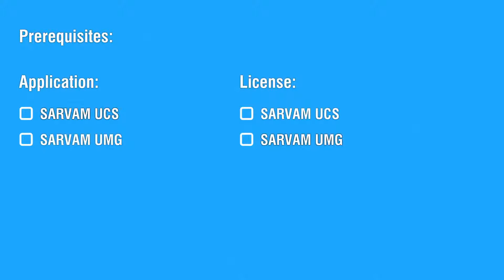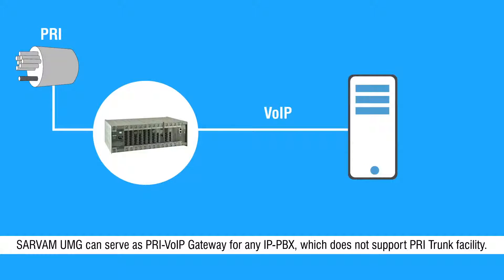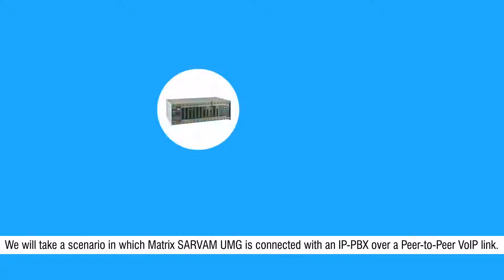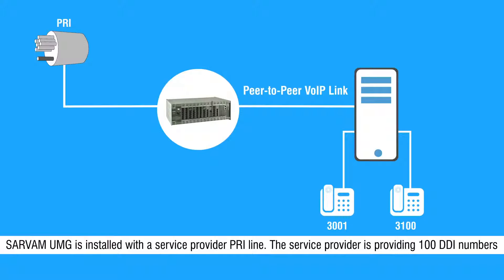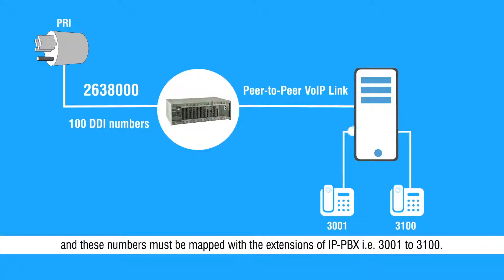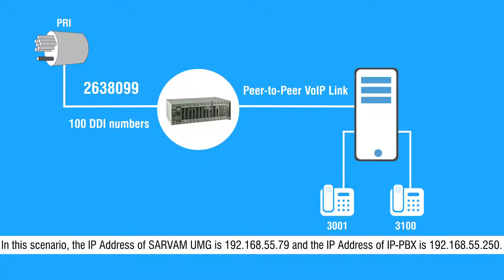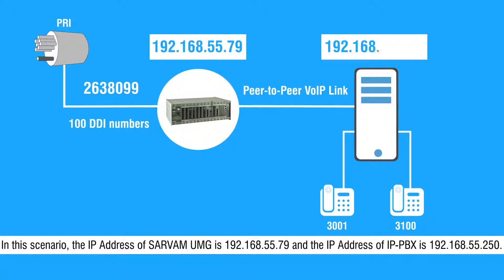Prerequisites: Matrix Eternity GENX with Servum UMG application and Servum UMG license. Servum UMG can serve as a PRI VoIP Gateway for any IP PBX which does not support PRI trunk facility. In this scenario, Servum UMG is connected with an IP PBX over a peer-to-peer VoIP link, and is installed with a service provider PRI line. The service provider is providing 100 DDI numbers mapped to extensions 3001 to 3100 of the IP PBX. The IP address of Servum UMG is 192.168.55.79 and the IP address of the IP PBX is 192.168.55.250.